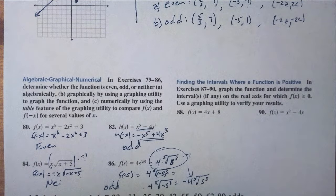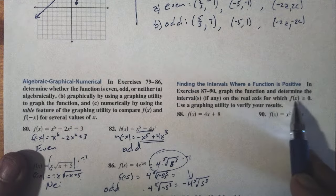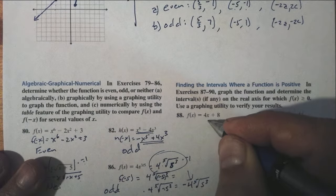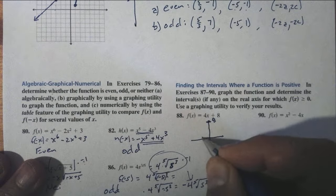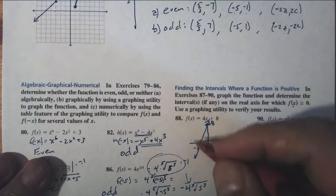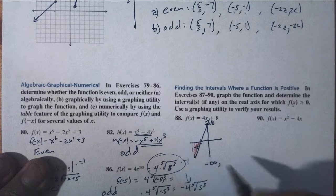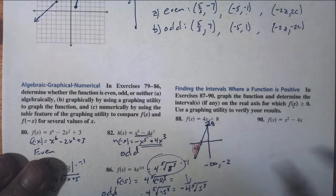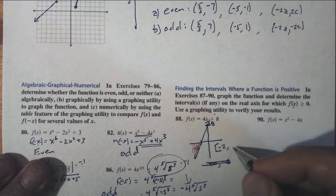In problems 87 to 90, graph the function and determine the intervals on the real axis where the height is above zero — where f(x) is greater than or equal to zero. For the first one, the graph goes through 8 with a slope of 4. Down 4 over 1, the graph is a line. The height is below zero to the left, and above zero starting at negative 2. So the interval where the height is above or equal to zero is from negative 2 to positive infinity, including negative 2.